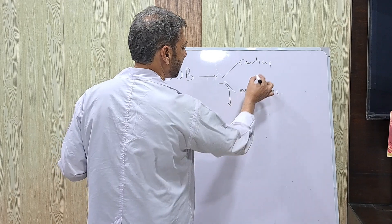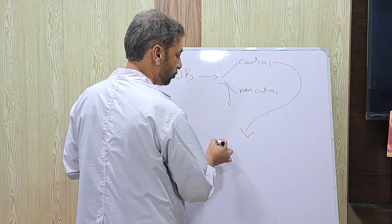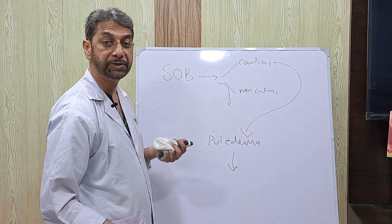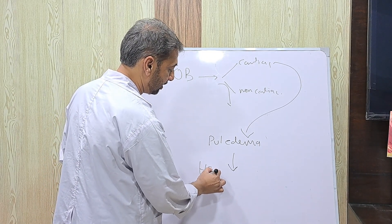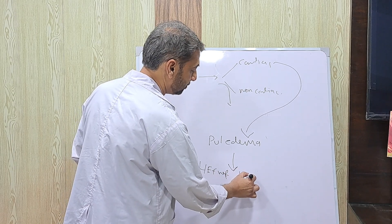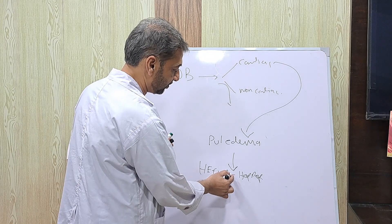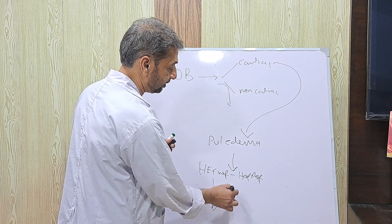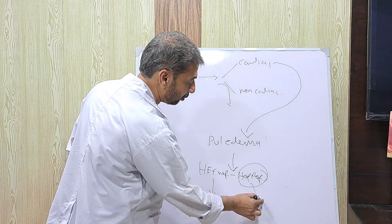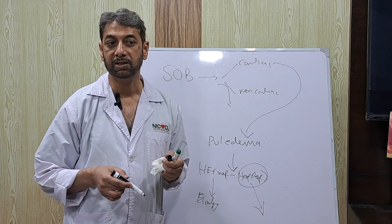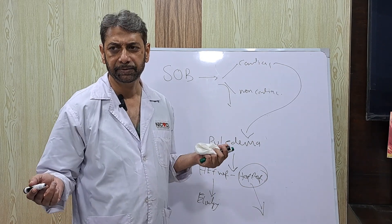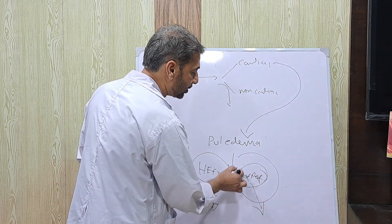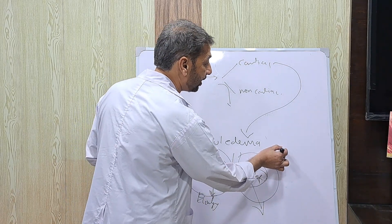Once you have admitted the patient as cardiac, then you need to tell me: is it pulmonary edema or something else? If pulmonary edema, what is the reason behind it? Reasons are commonly HFpEF or HFrEF. A person with reduced EF — you also have to give me the etiology. If you have diagnosed them as HFpEF, give me the etiology: hypertensive heart disease, valvular problems, hypertrophic cardiomyopathy, or whatever. Similarly, if it's HFrEF, again give me the diagnosis. And in both conditions, along with the diagnosis, I want the aggravators.